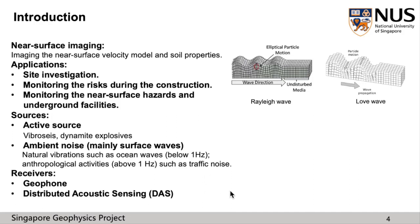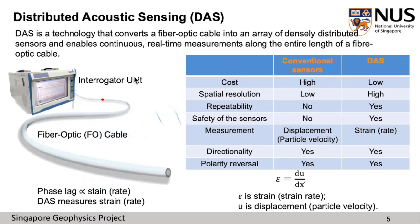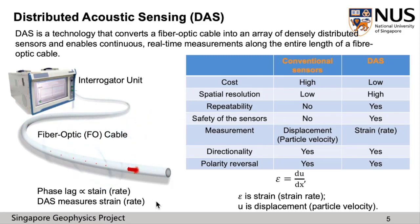There are mainly two kinds of receivers to collect the ambient noise: geophone and DAS. DAS is a technology that converts a fiber optic cable into an array of densely distributed sensors and enables continuous real-time measurements along the entire length of a fiber optic cable. The system of DAS consists of an interrogator unit and a fiber optic cable. The interrogator sends probe pulses to the fiber and then receives the corresponding backscatter light signals from the natural defects in the glass which form the fiber. The acoustic information is obtained by analyzing the changes in the phase of the backscatter light signals for successive probe light signals. This table shows the comparison between conventional sensors and DAS. Conventional sensors measure displacement or particle velocity while DAS measures strain or strain rate, and the formula here shows their relationship.